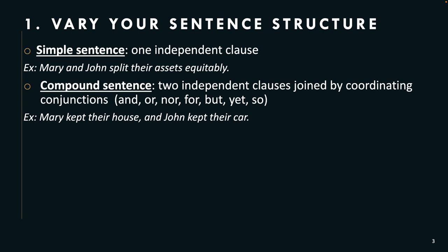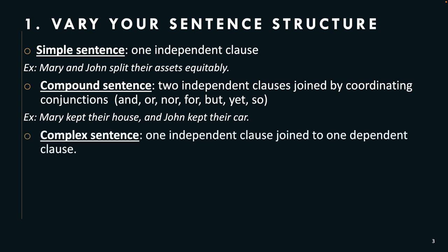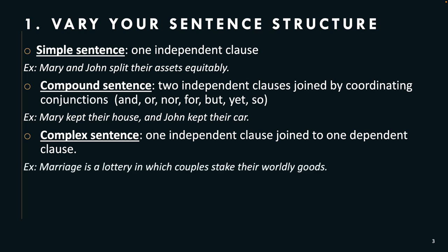Now let's take a look at the other type of sentence in English: a complex sentence. It's one independent clause joined to one dependent clause. For example: 'Marriage is a lottery' — that's the independent clause — 'in which couples stake their worldly goods.' So 'in which couples stake their worldly goods' is a dependent clause. It cannot stand alone; it is called a dependent clause.